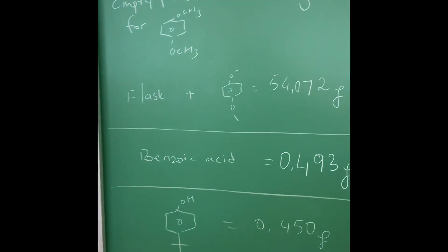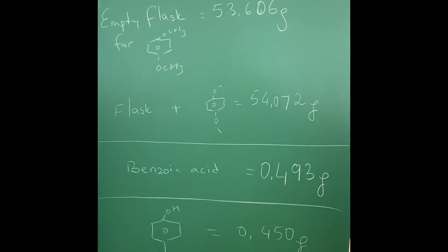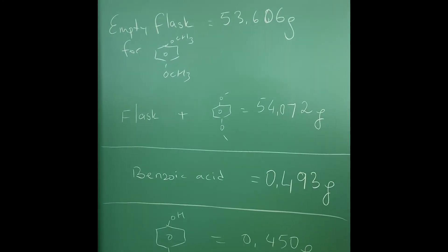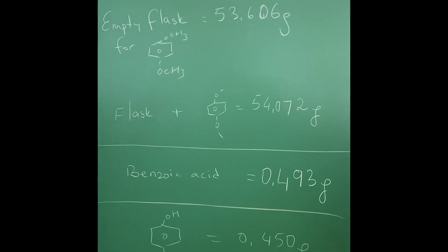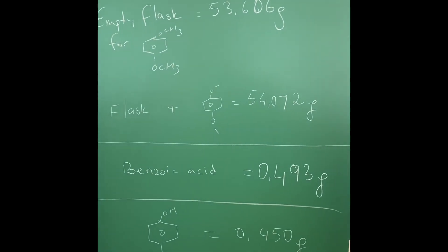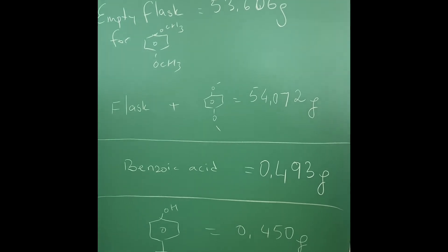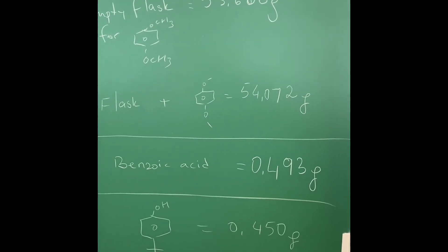Those are all crude products. Overall we have those amounts for three compounds. We have to calculate percent recovery and each one, we started with 0.5 gram.